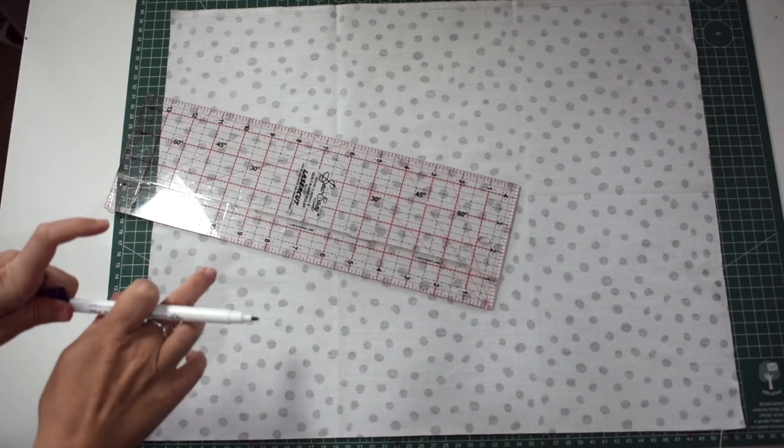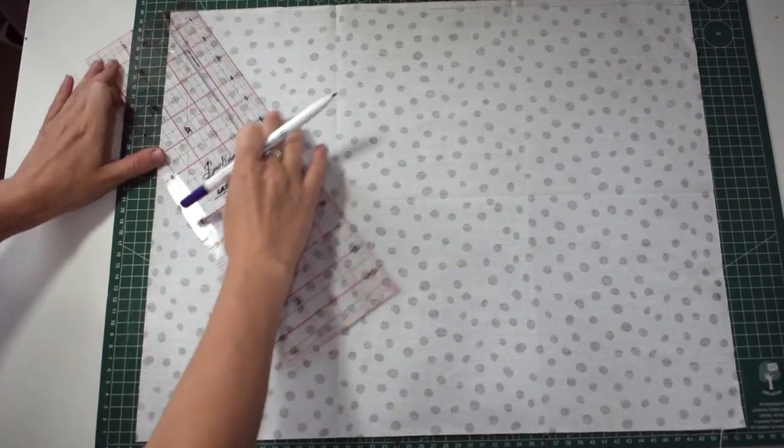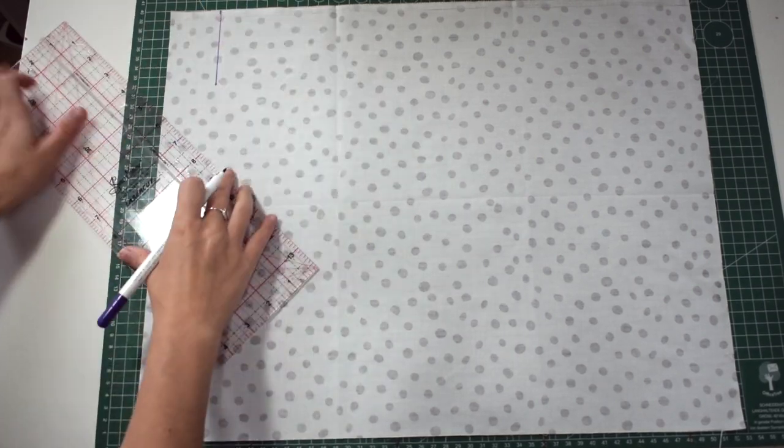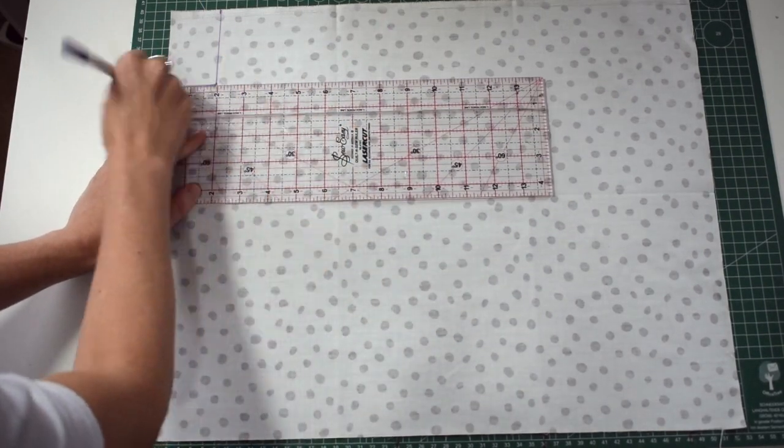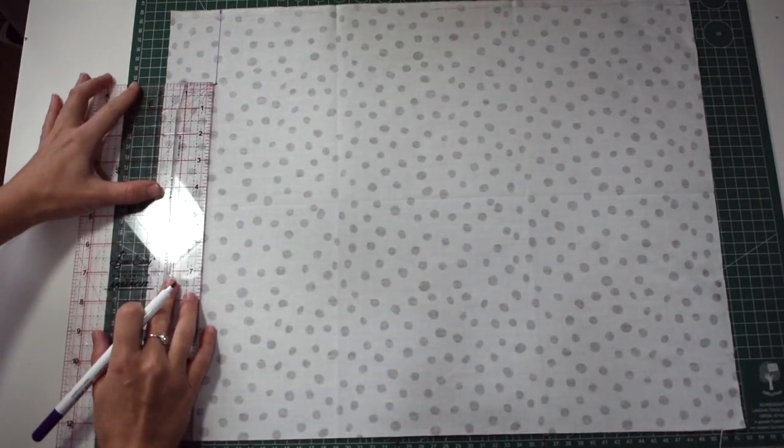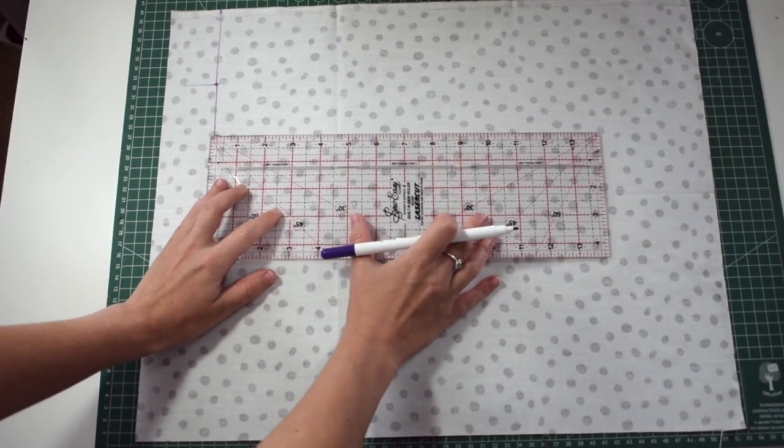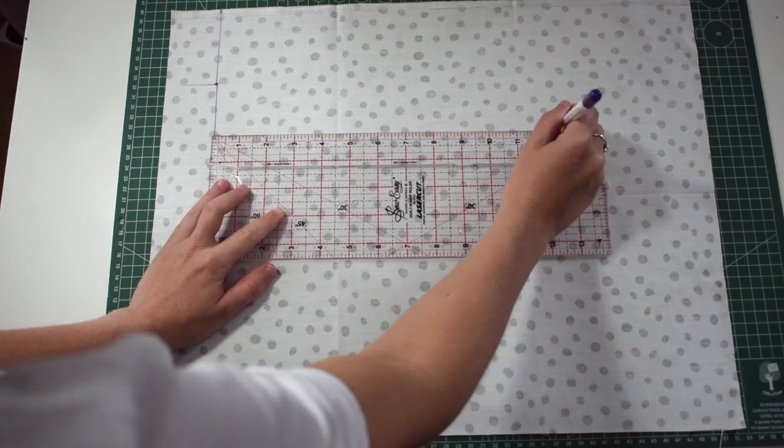So the first step we're going to do is measure out our fabric. The first square is 3 inches by 2 inches, that's the smaller piece of fabric and the larger piece of fabric is 5 inches by 12.5 inches and then we're going to cut this out.